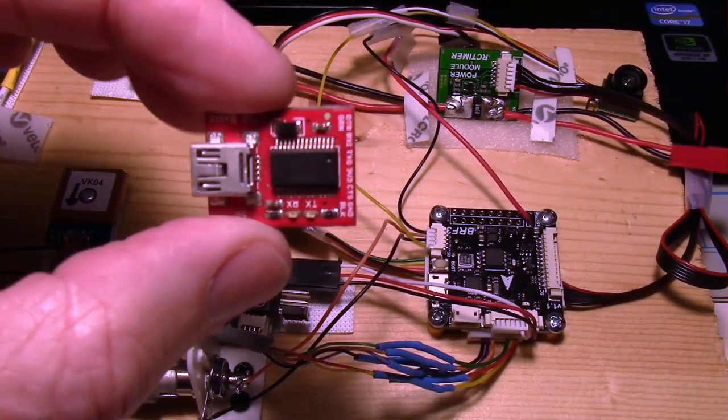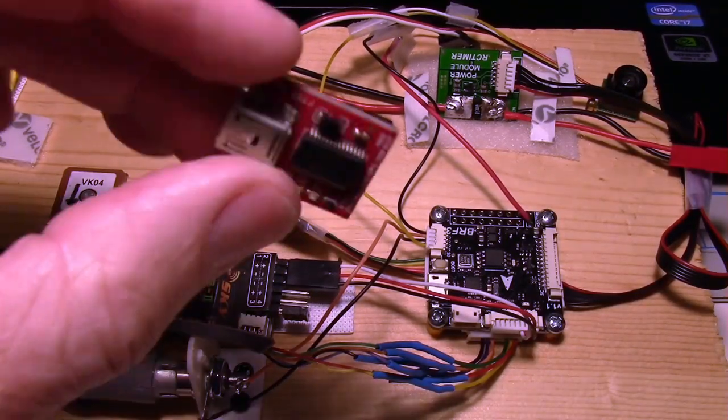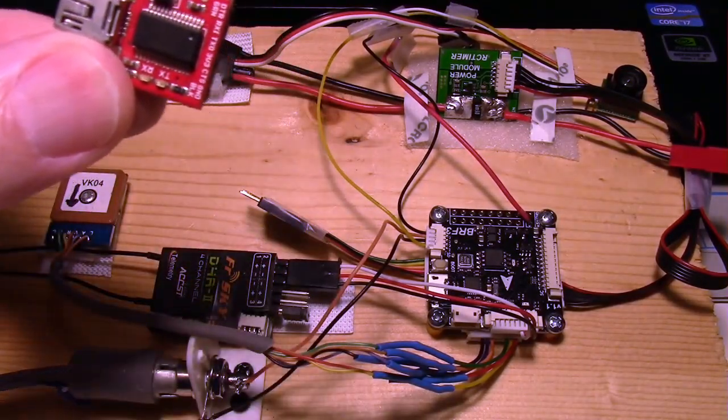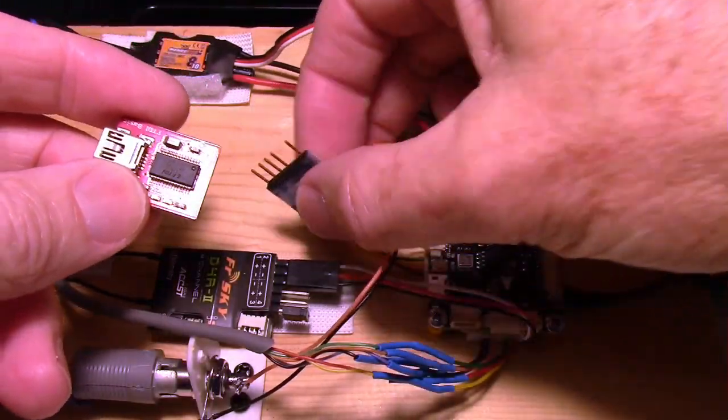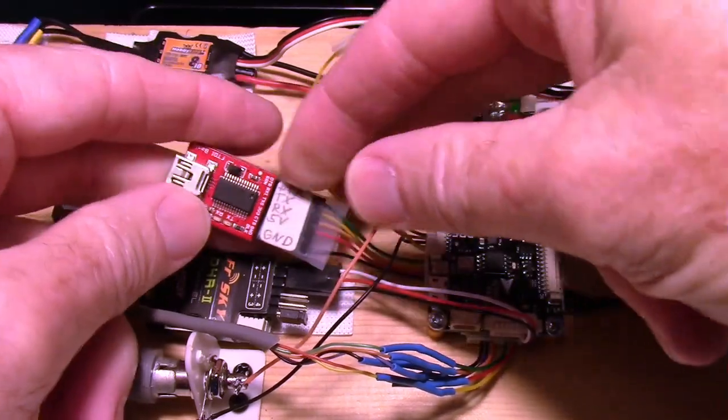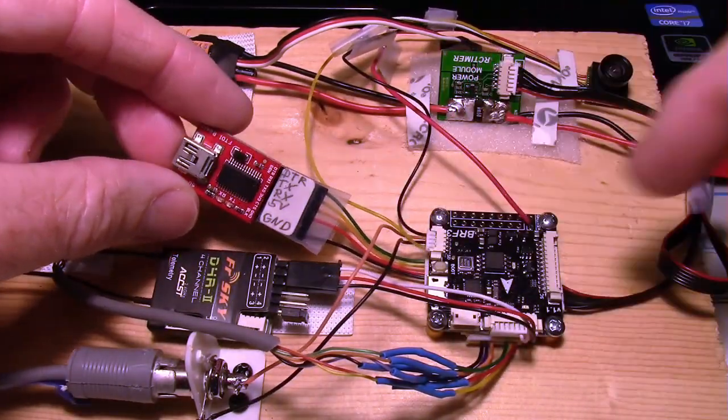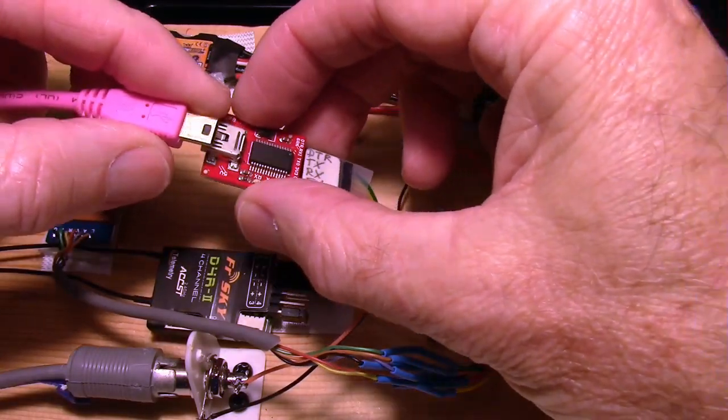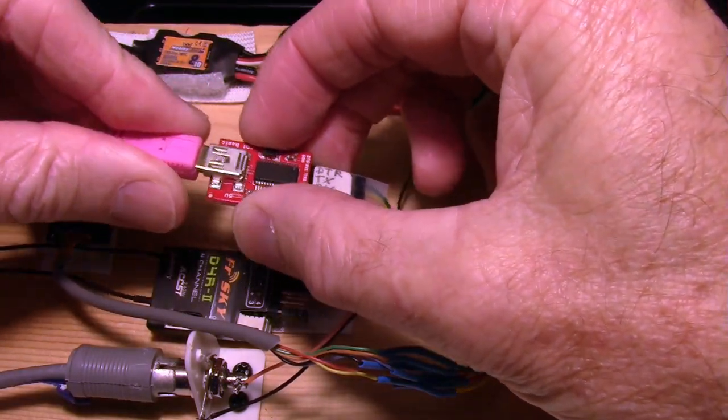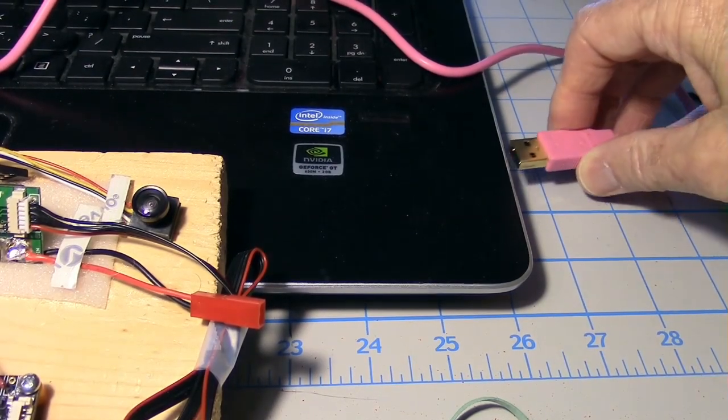Guys, you need one of these. This is an FTDI board. An FTDI to USB adapter. And it plugs on right here, like this, onto the FTDI cable from your B-Rotor. Now, go ahead and plug the USB cord into the FTDI adapter, like that. And plug the other end into your computer.